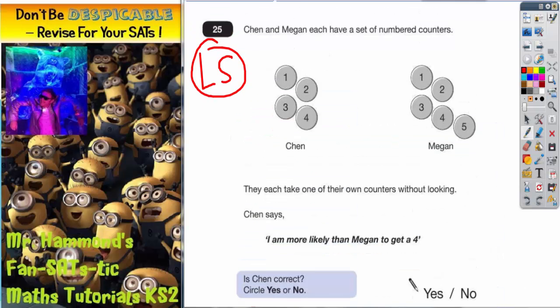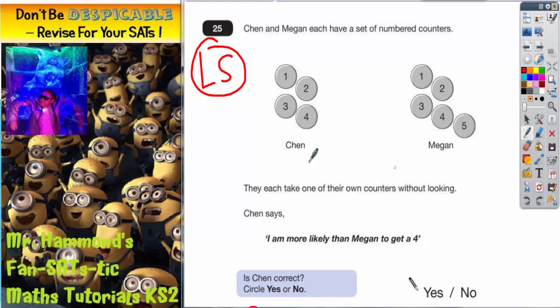So, let's go back and have a look. What's the chance that each person gets a 4? Well, for Chen, there's one counter out of a possible 4 that is a 4. There's the 4 and there's 4 altogether, so that's 1 out of 4.